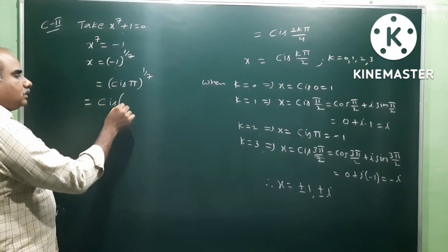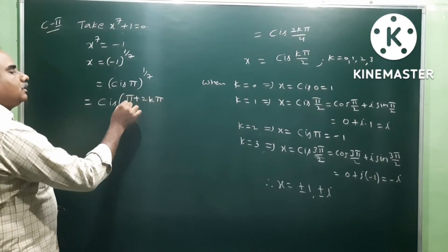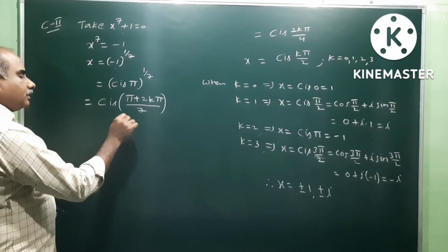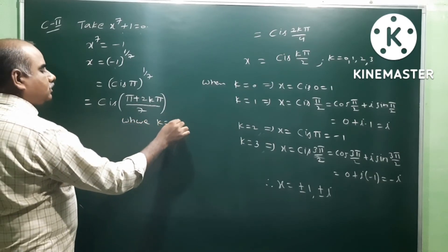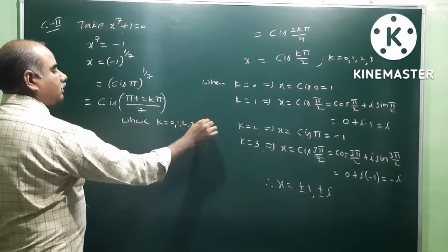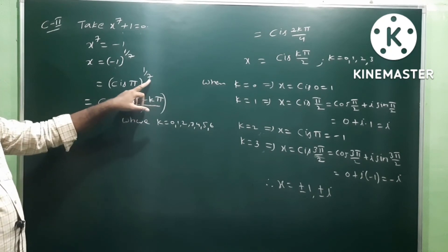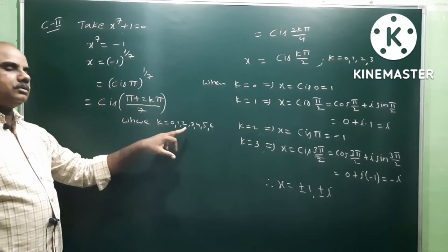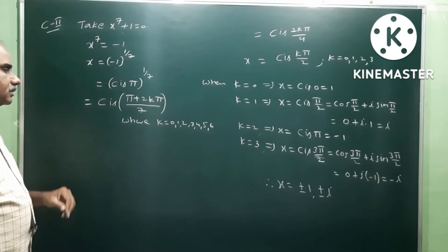So the values are cis of π plus 2kπ by 7, where k is equal to 0, 1, 2, 3, 4, 5, 6. Here n is 7, so k takes 7 values from 0 to 6 — total 7 values.